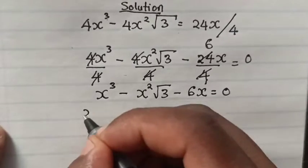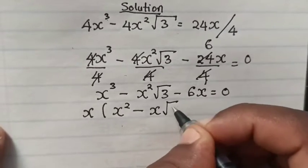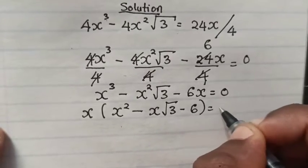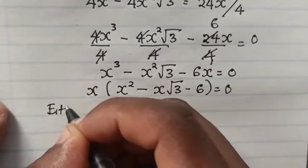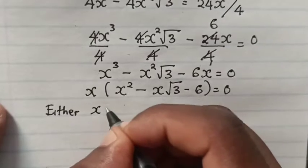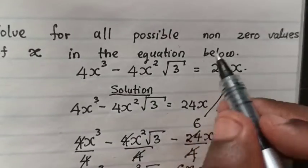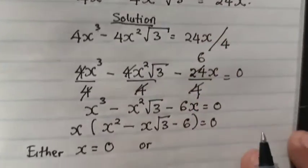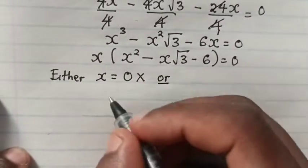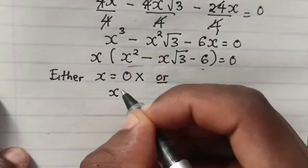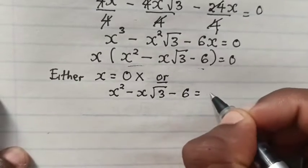Then from here we take x out of the bracket. So it will be x(x² minus x√3 minus 6) is equal to 0. So either x is equal to 0, but our equation asks for non-zero values, so x is not equal to 0. So all x will come from the equation x² minus x√3 minus 6 is equal to 0.